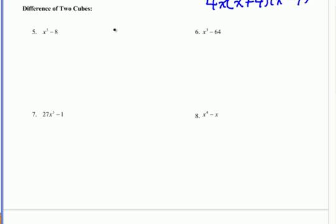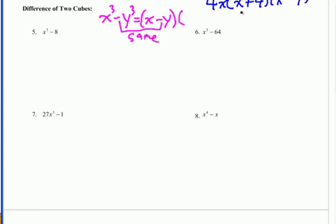Now we're going to talk about a difference of two cubes. Instead of having two squared terms that are subtracted, we'll have two cube terms. This one's a little more complex, but just find the patterns. The first parenthesis is just going to be x minus y — these two middle signs will always match up. For the second parenthesis, you square the first term; the next sign will always be opposite whatever this sign is; the middle term is just these two multiplied together; and the last term is the last term squared. We're still going to look for a GCF first.